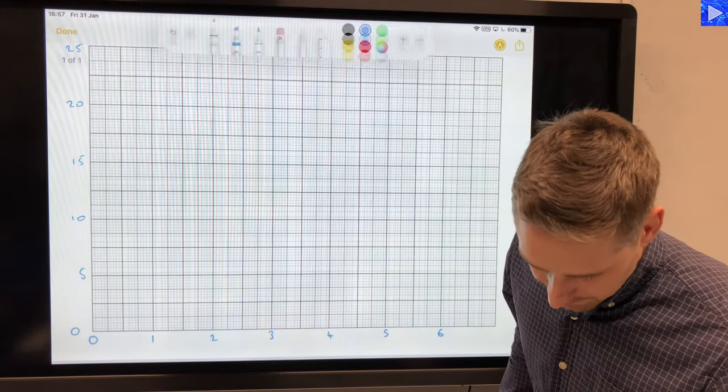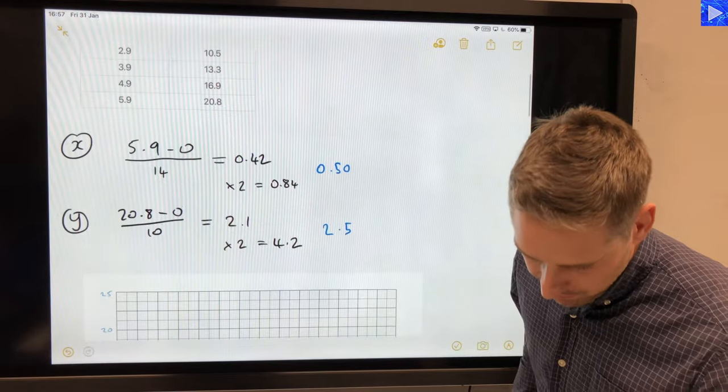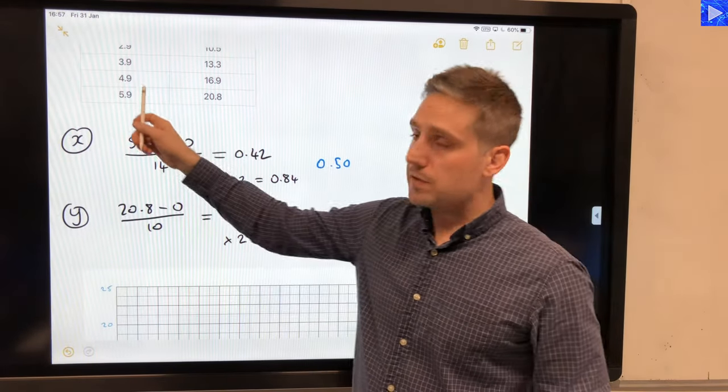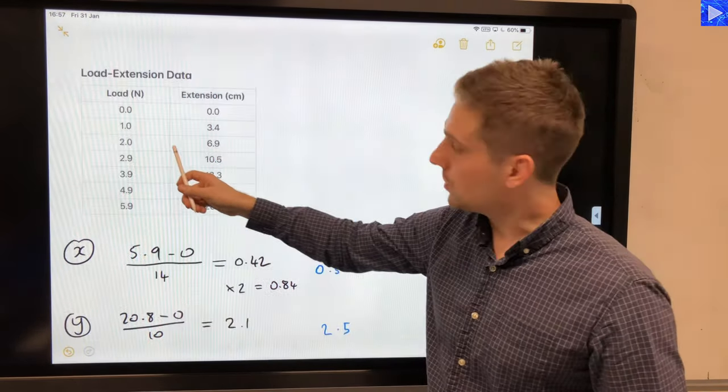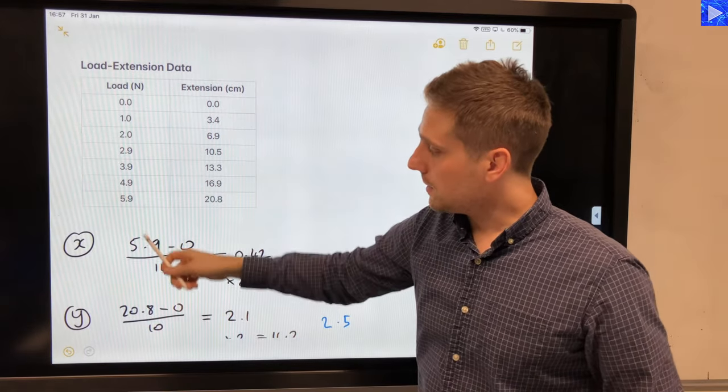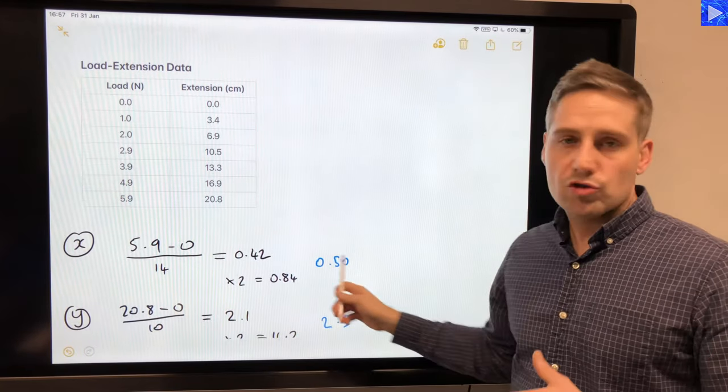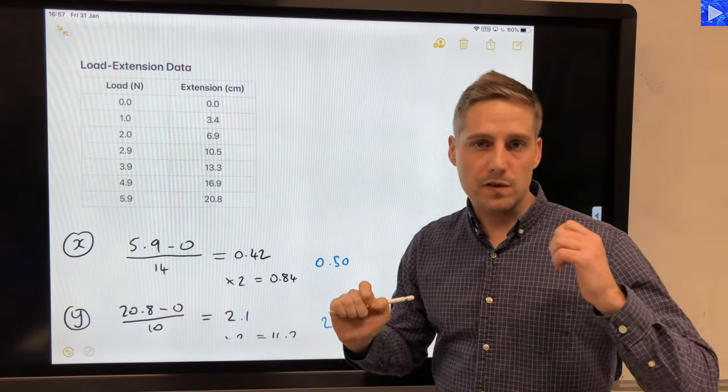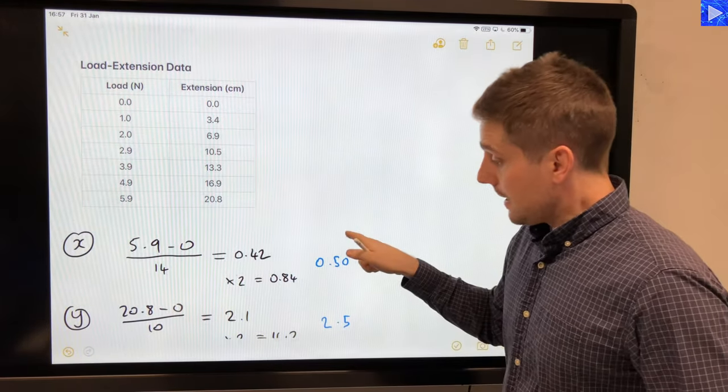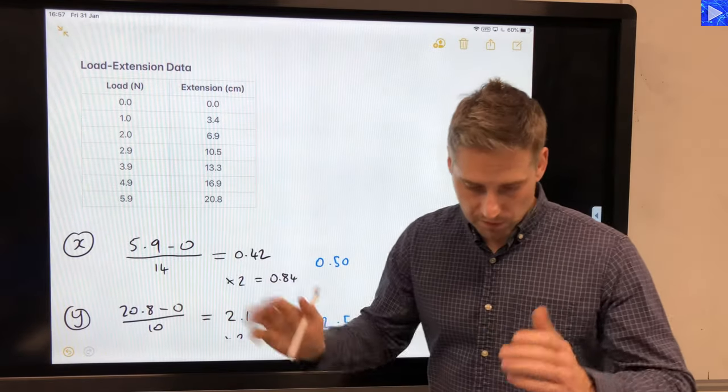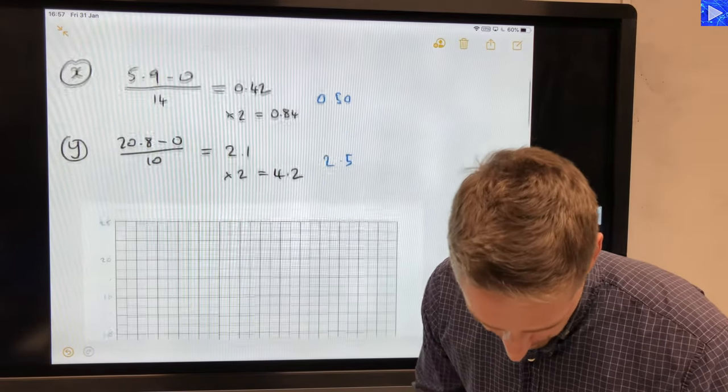Okay, so that's our first data done. So just to remind you of the process again: find the difference in your x data, the difference in the x data divided by the number of squares that you've got, and if you double that then you're trying to pick a value that's neatly divisible by 10 in that range. So there we go. Do the same for your y data.